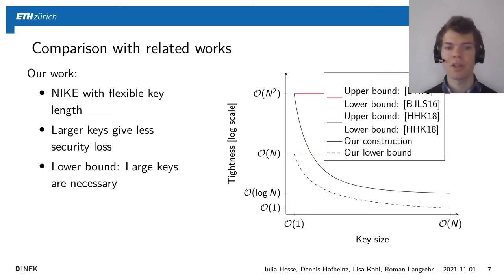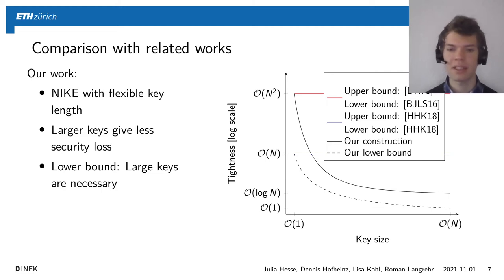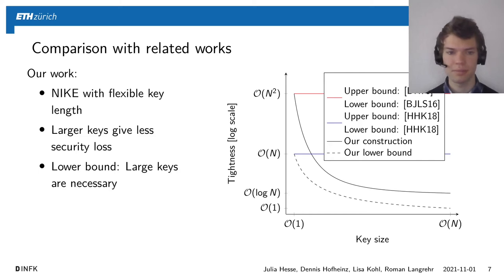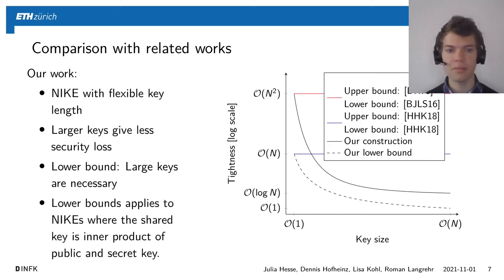We also give a lower bound showing that these large keys seem to be necessary. However, our lower bound does not quite match our upper bound: it only shows that O(N) is necessary for constant-size keys, and you need a key size of O(N) to get constant tightness. Our lower bound applies to NIKEs where the shared key is the inner product of the public and secret key, which is the case for all known group-based constructions.